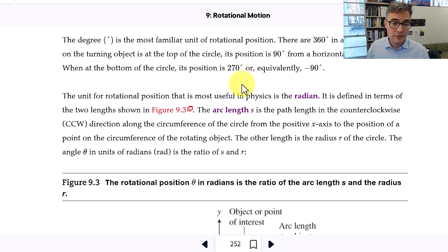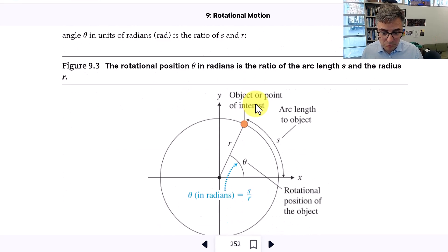It's just another unit of angle. So you can use degrees or you can use radians. The SI unit of angular position is the radian, so it's important to use it.